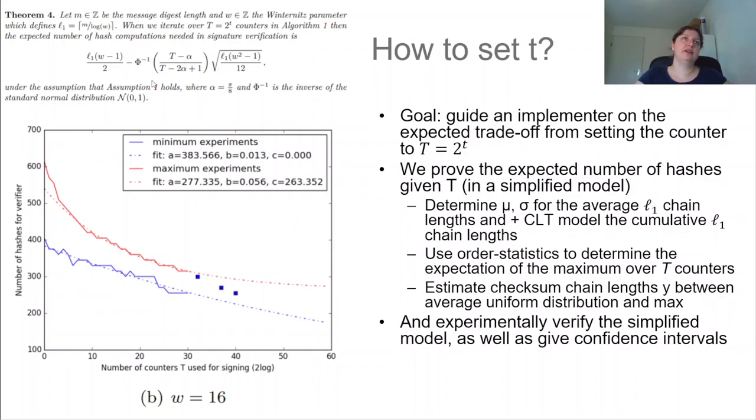And again, the theorem here is on the top left and I won't go into the full proof. But the idea is that we first, by the central limit theorem, model the length of the cumulative L1 chain lengths. And then given this distribution, we use order statistics to determine the expectation of the maximum over T counters.